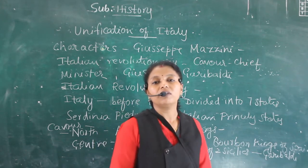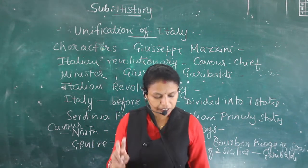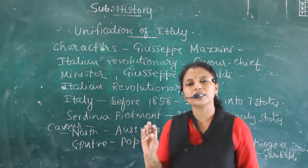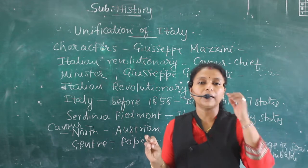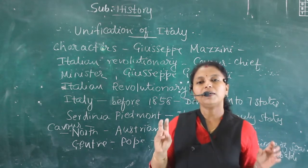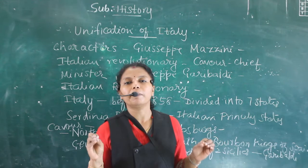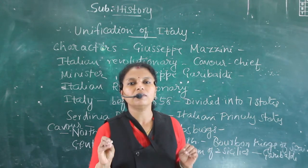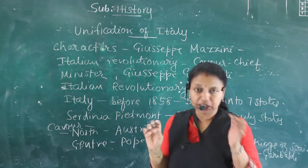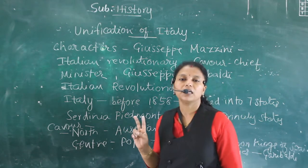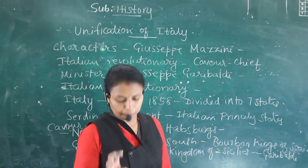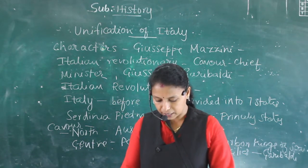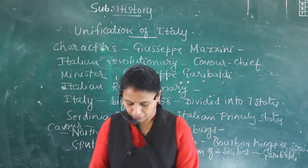Another key figure was King Victor Emmanuel II. He was the ruler of Sardinia-Piedmont. Sardinia-Piedmont was an Italian princely state, which was a part of Italy.